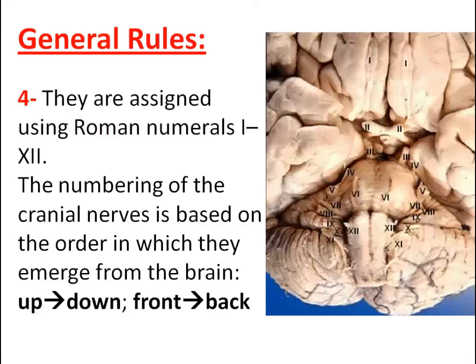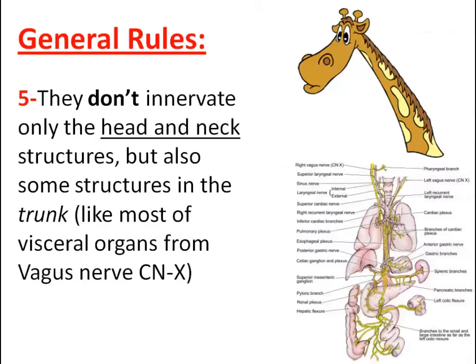Four: they are assigned using Roman numerals, 1 to 12. The numbering of the cranial nerves is based on the order in which they emerge from the brain, from up to down, from the front to the back. Five: they don't innervate only the head and neck structures, but also some structures in the trunk,